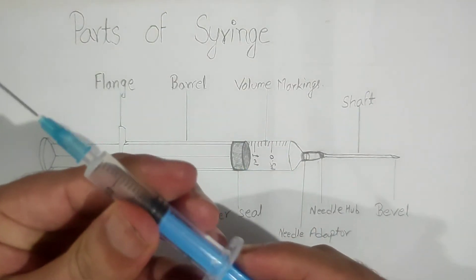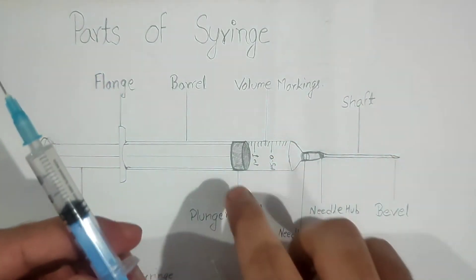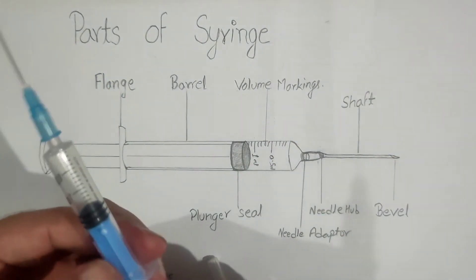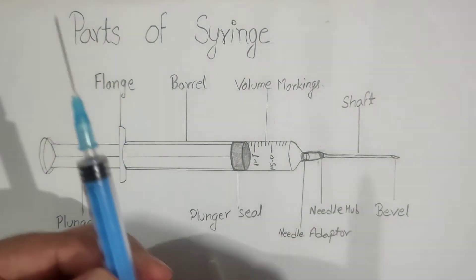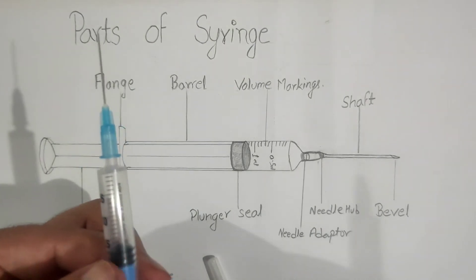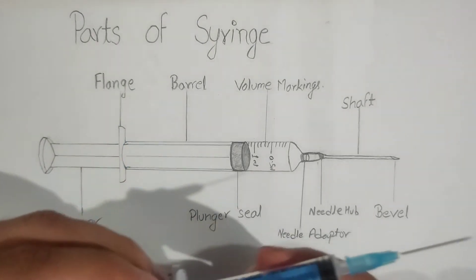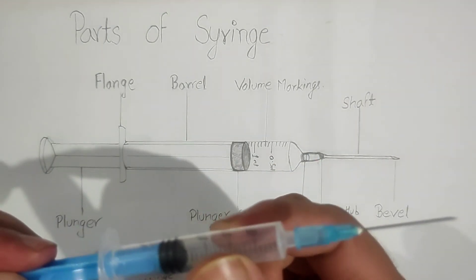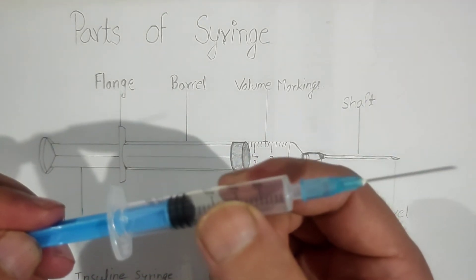This black portion you can see is known as the plunger seal, which is used to aspirate the drug or fill the syringe. And this hollow plastic part is known as the barrel.